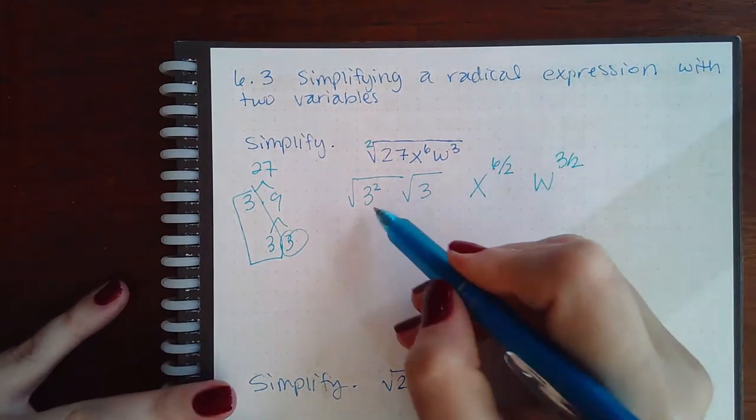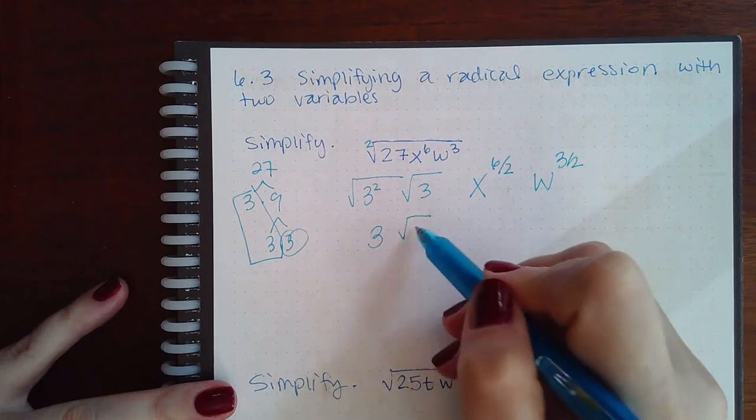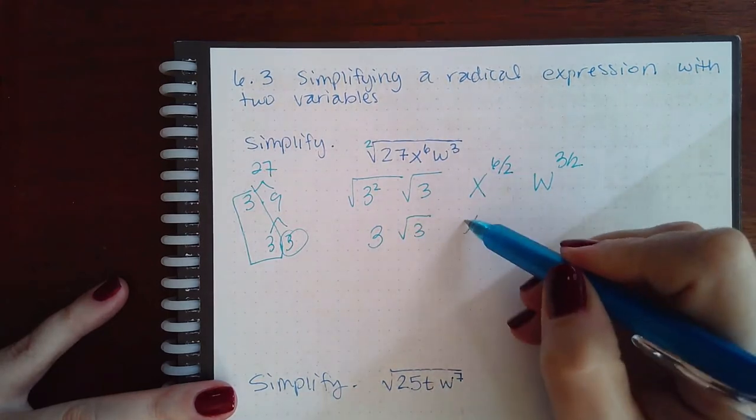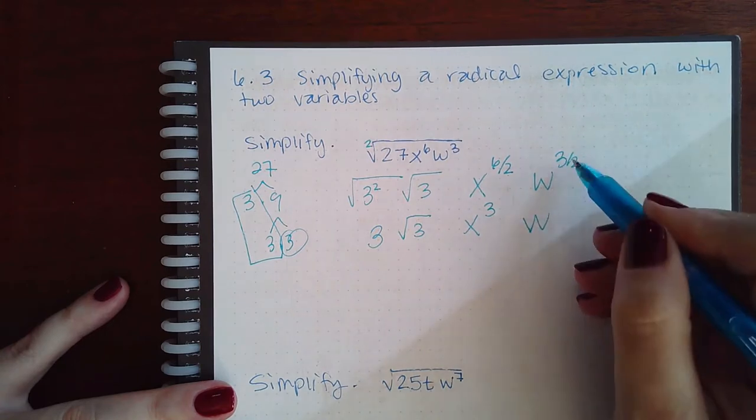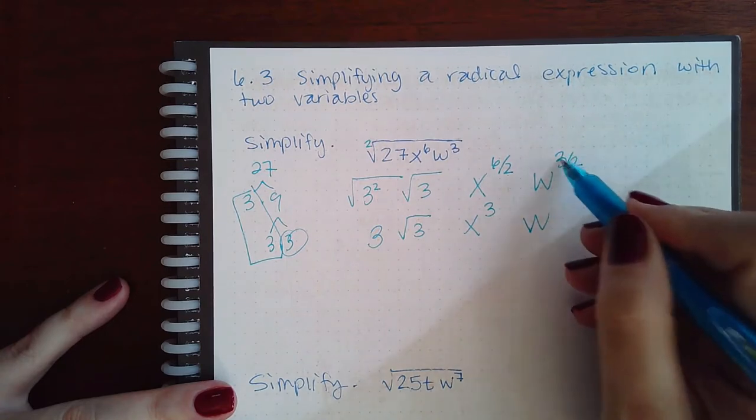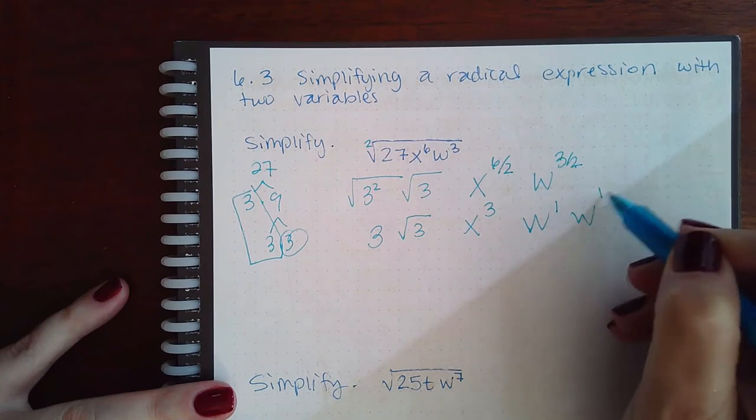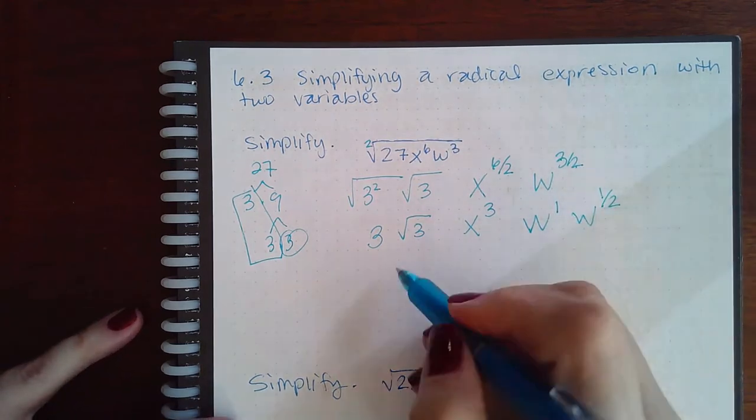Now here this cancels, we get 3. We get that 6 over 2 is a perfect 3, and then 3 over 2 - 2 goes into 3 one time with one left over. So then this is 3